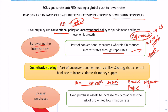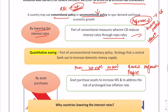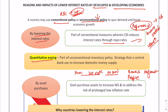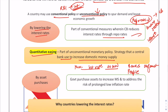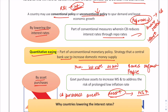The government has to switch to unconventional policy, and within that, quantitative easing is a key tool. It is a strategy that a central bank uses to increase domestic money supply through asset purchases. These asset purchases are matched by a corresponding money flow into the economy. When the central bank purchases assets and pays for them, money supply increases.